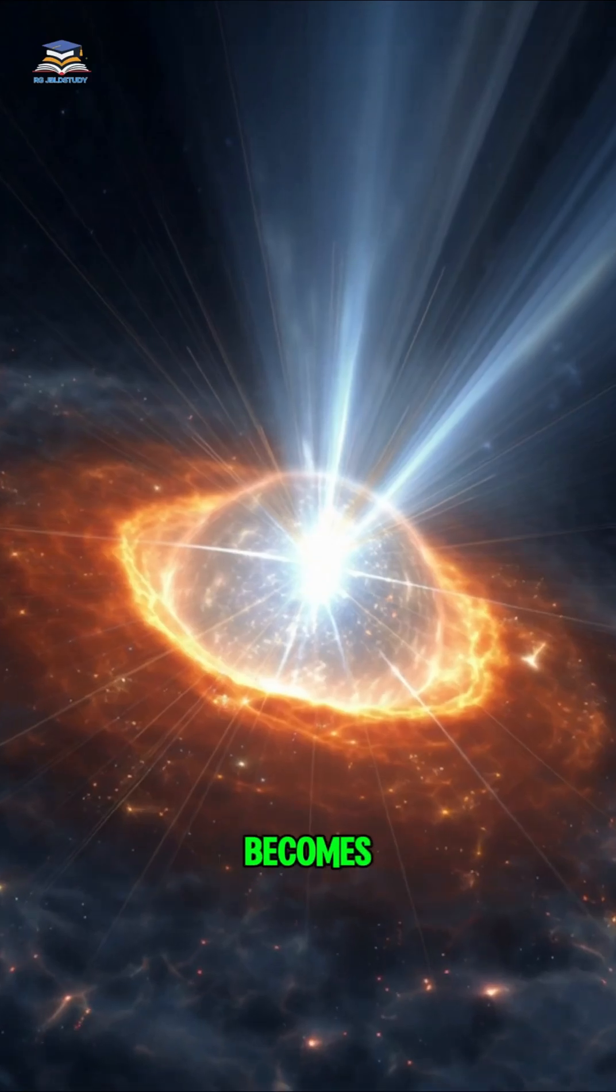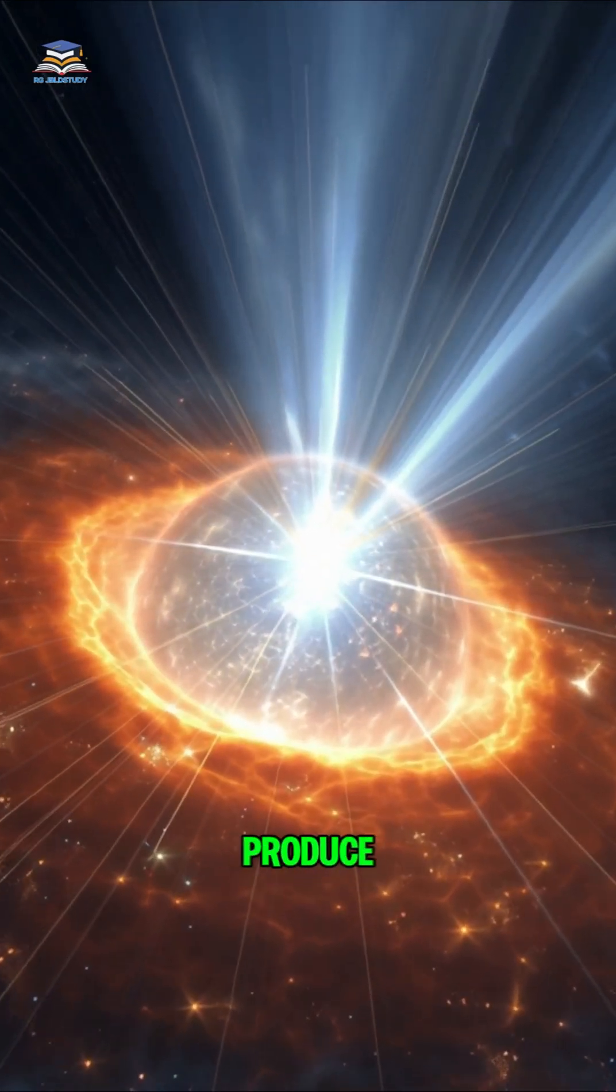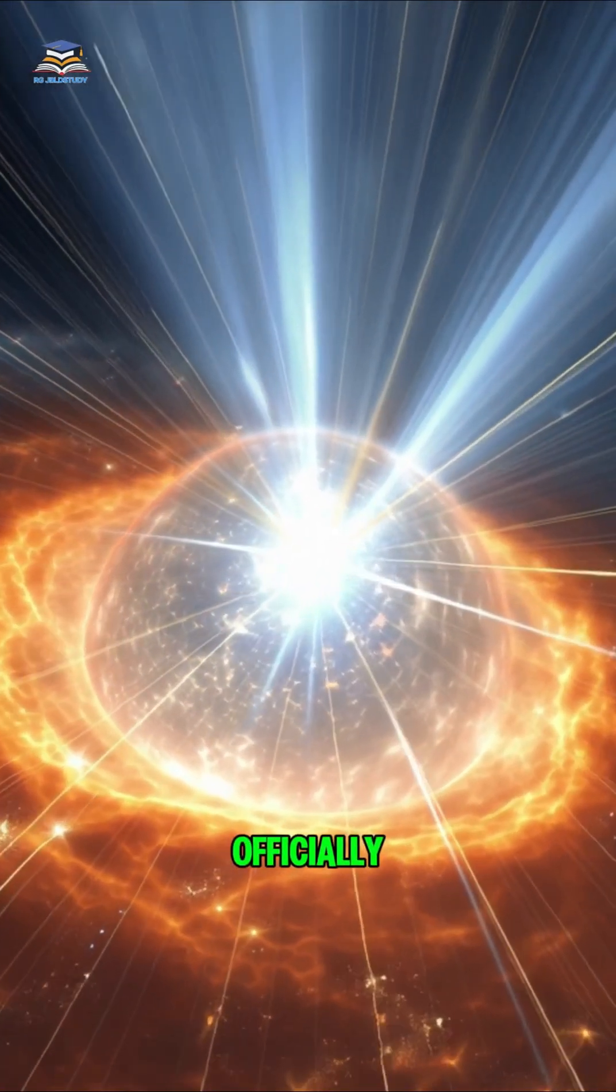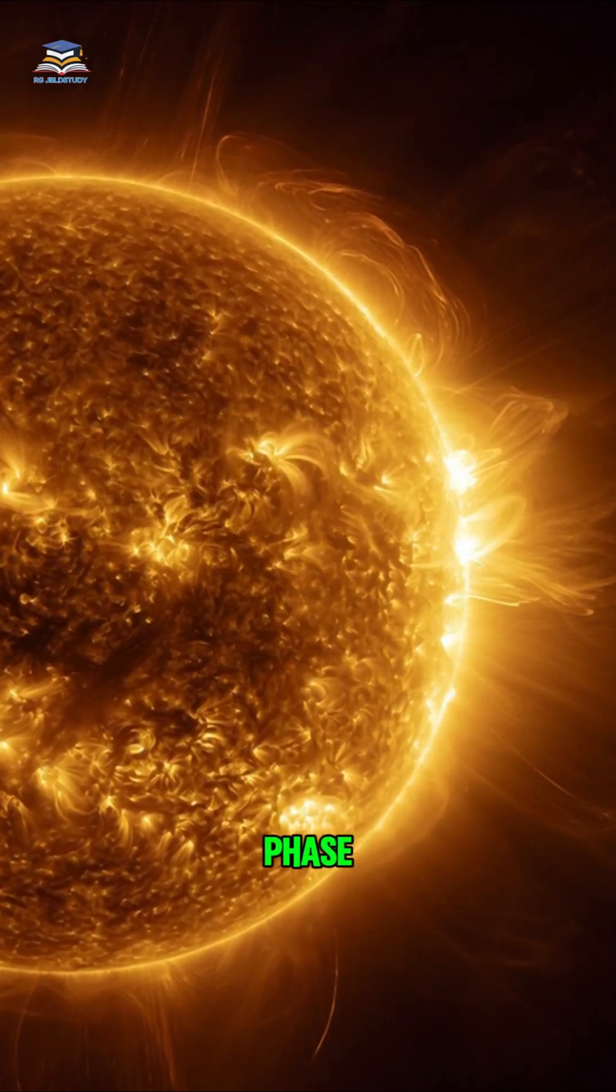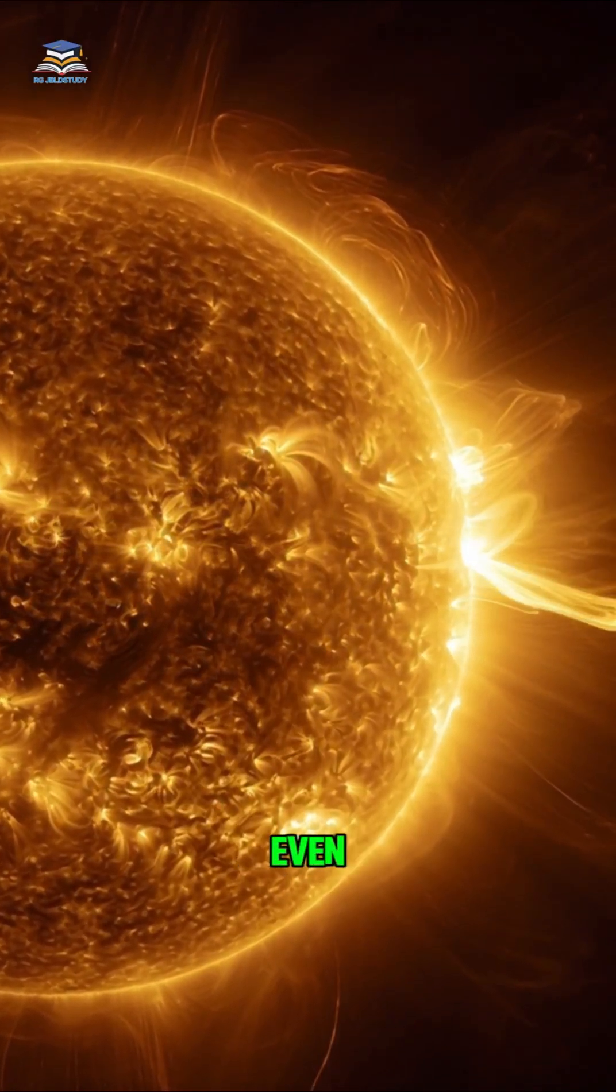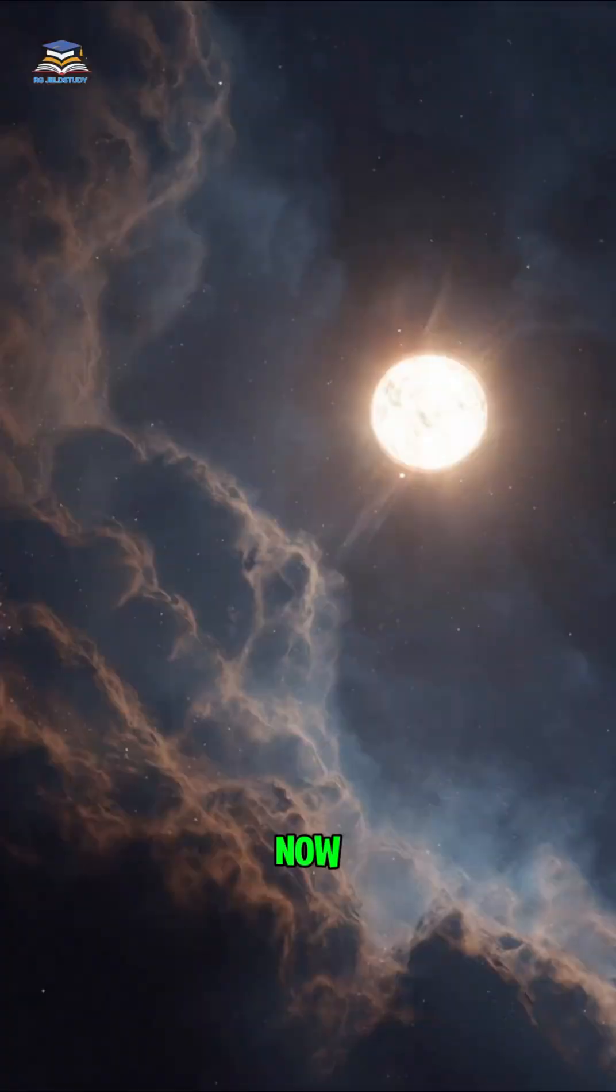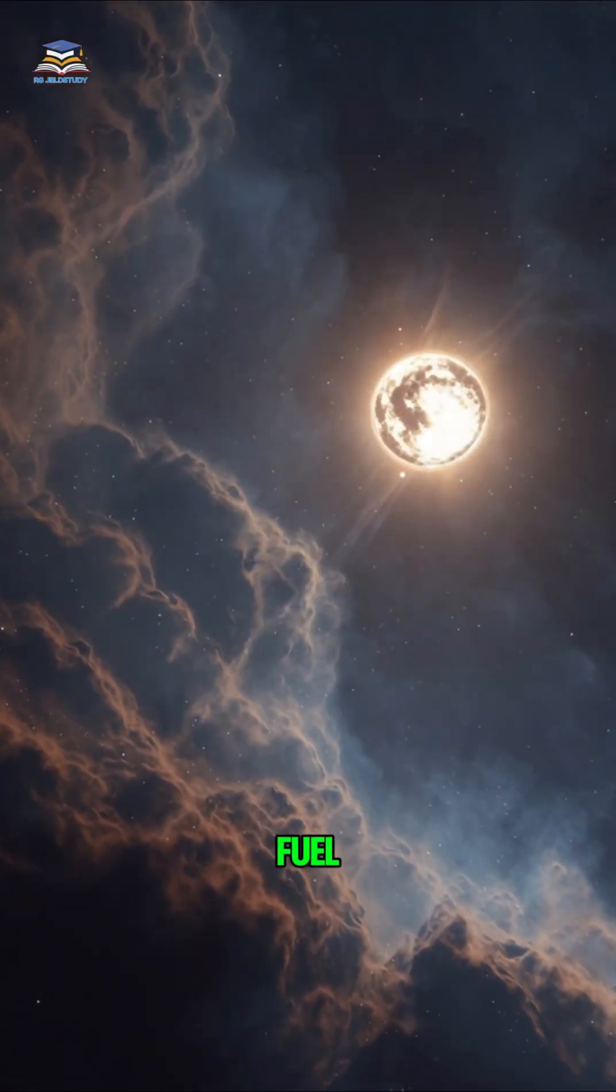When the protostar becomes hot enough for hydrogen to fuse and produce energy, a real star is officially born. This is the longest phase of its life, the main sequence. Even our sun is living in this stage right now, but eventually, even a star's fuel begins to run out.